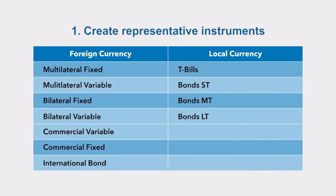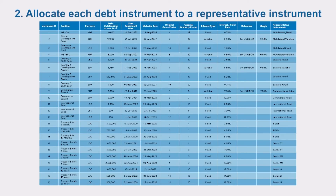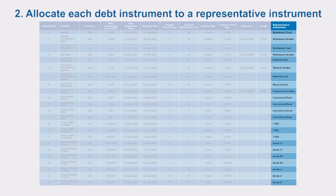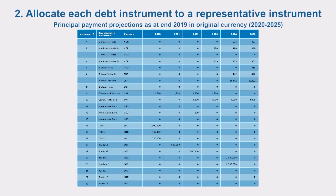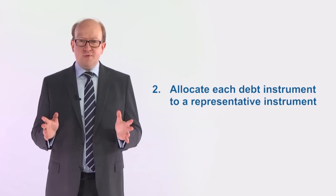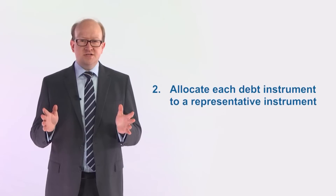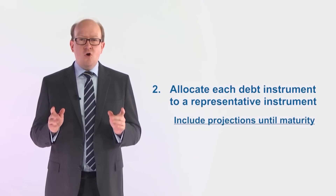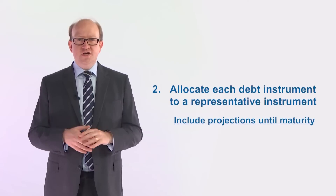In this instance, we use 11 instruments where ST indicates short term, MT medium term, and LT long term. Step 2: we then allocate each debt instrument in the portfolio to these representative instruments as set out in the final column. We can illustrate the process of cash flow aggregation by looking at the first six years of principal payments. However, it is necessary to include all payment projections until maturity for the MTDS analysis.